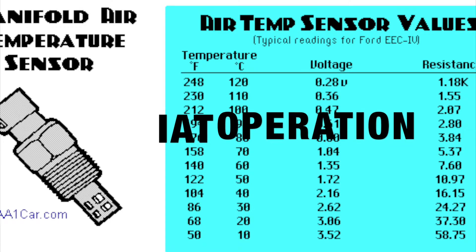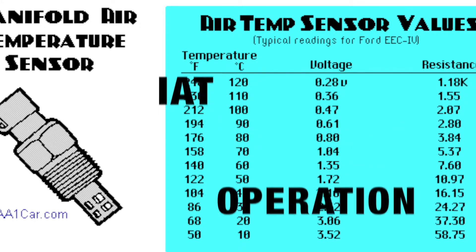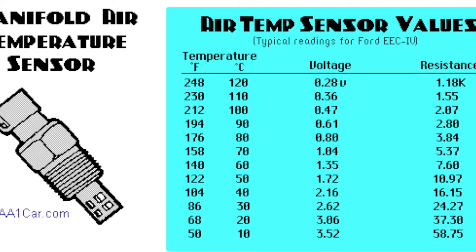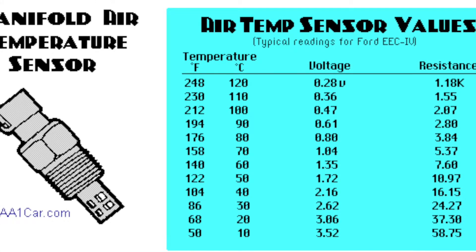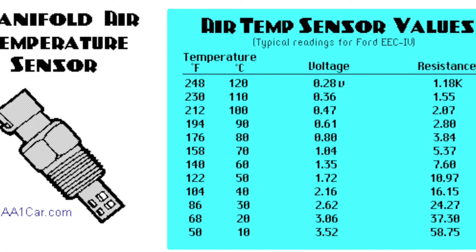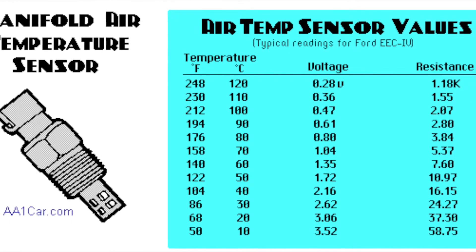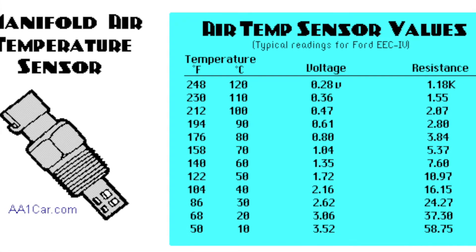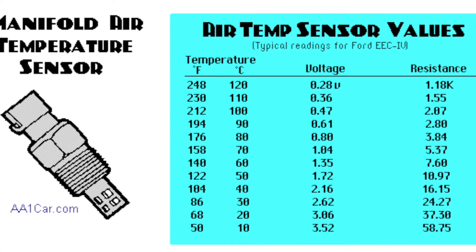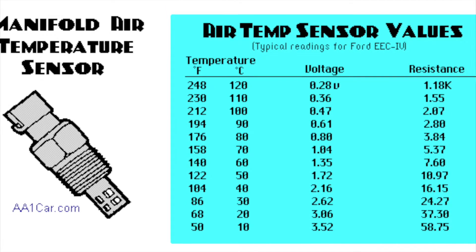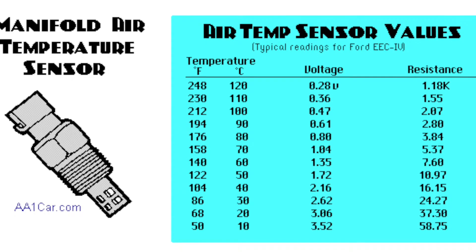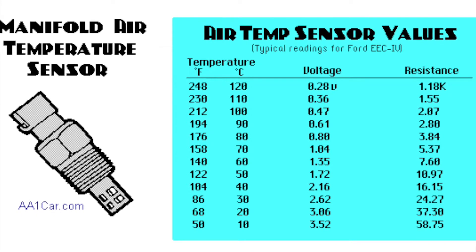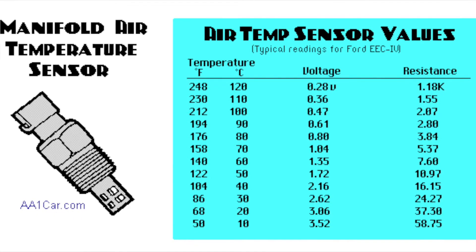The air temperature sensor is a thermistor, which means its electrical resistance changes in response to changes in temperature. It works the same as a coolant sensor. The PCM applies a reference voltage to the sensor then looks at the voltage signal it receives back to calculate air temperature. The return voltage signal will change in proportion to changes in air temperature. Most air temperature sensors are negative temperature coefficient thermistors, which have high electrical resistance when they are cold, but the resistance drops as they heat up.